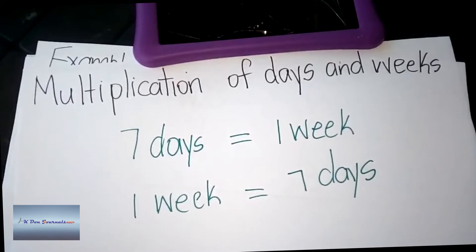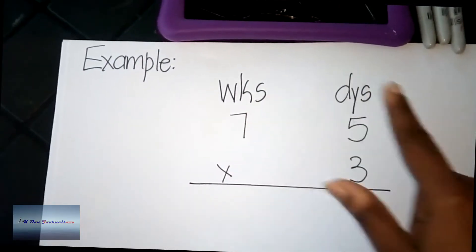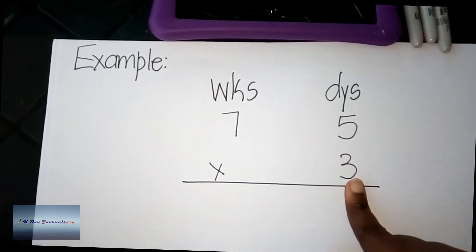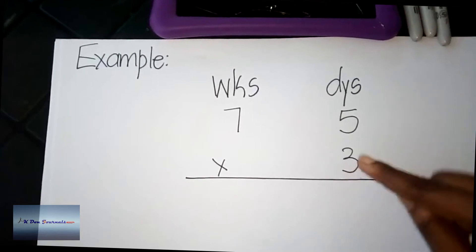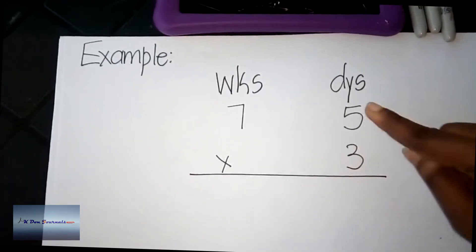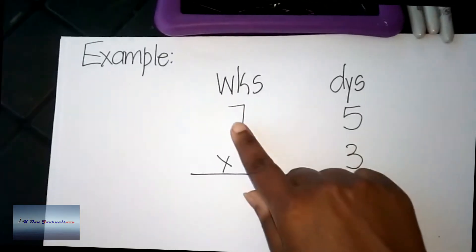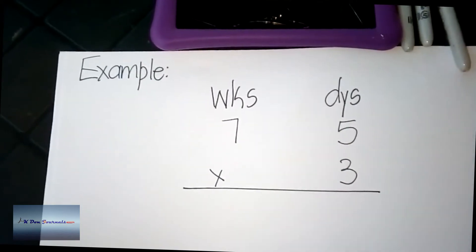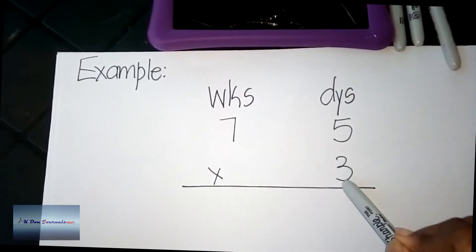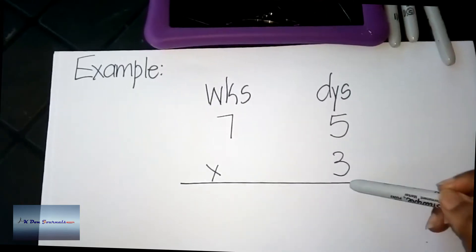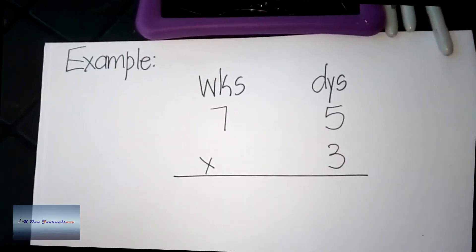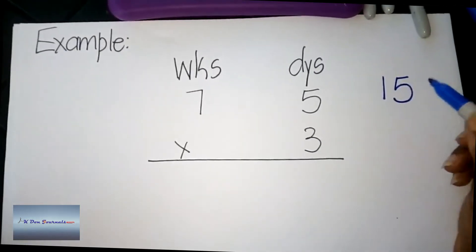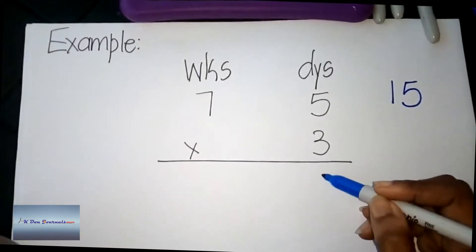Let's look at our first example: we have seven weeks and five days, multiplied by three. To solve this, we are going to multiply three and five, then three and seven. Step one says we are to multiply three and five, which gives us 15.